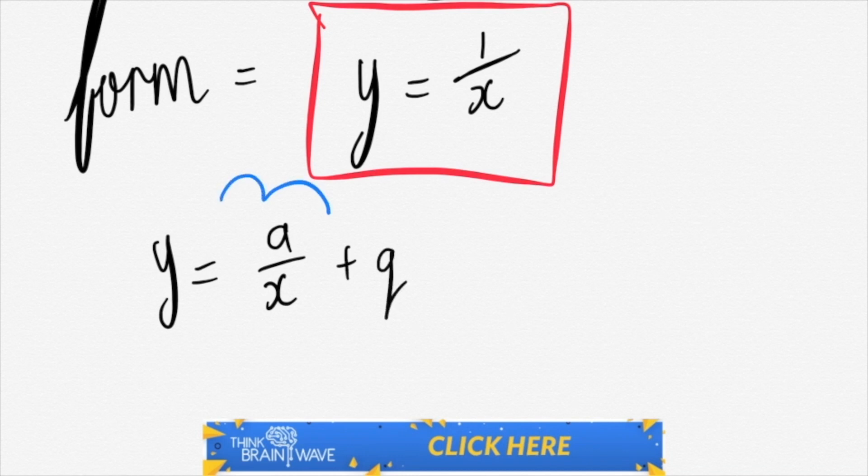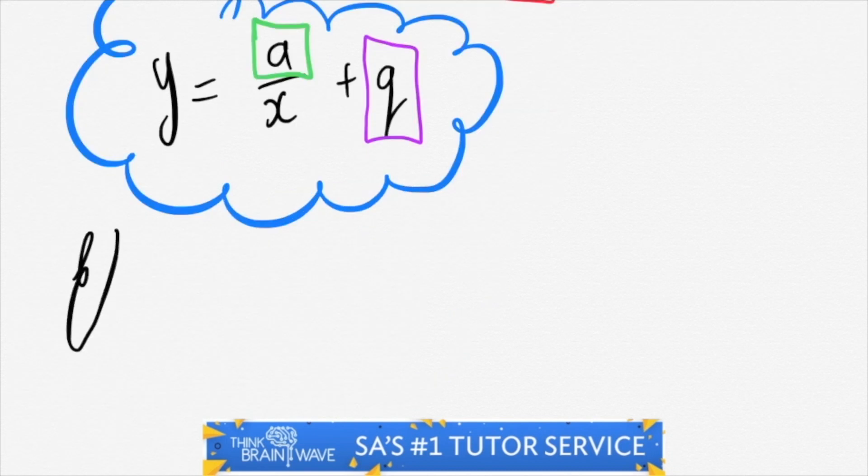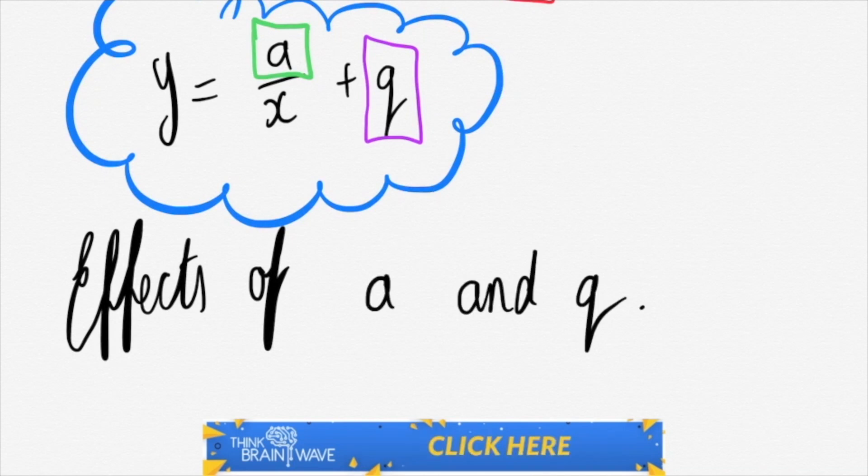It's much the same, you just have a vertical shift in your asymptote and that's represented by the q. So let's discuss this further. Let's discuss the effects of a. We'll do q as well.